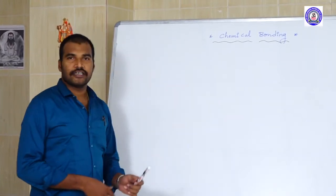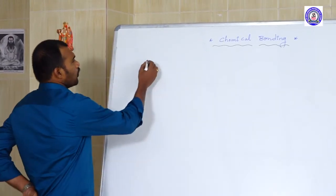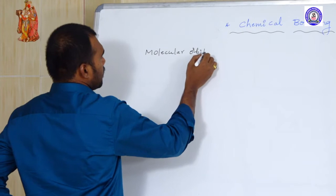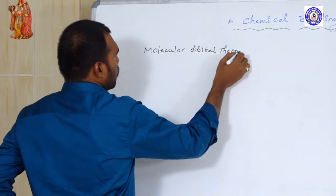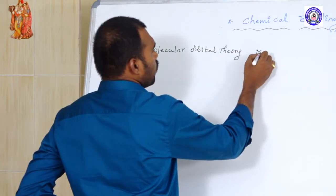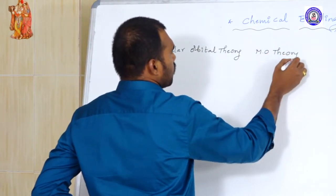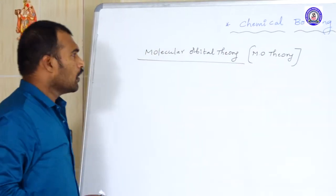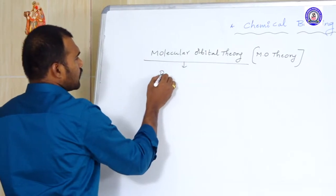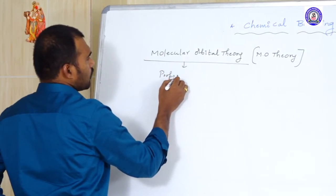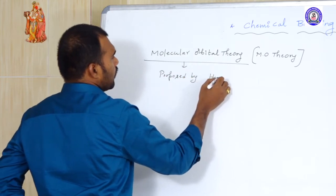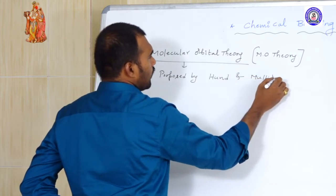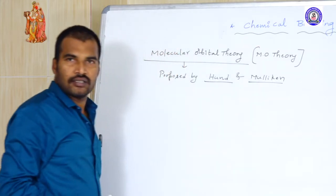Hello students. In this video, let us continue with the Molecular Orbital Theory, or simply we call it MO Theory. This theory is also based upon the quantum mechanical model. This theory was proposed by Hund and Mulliken — both scientists together proposed it.